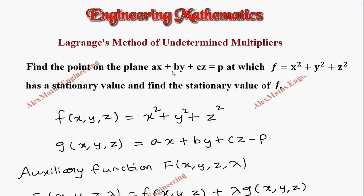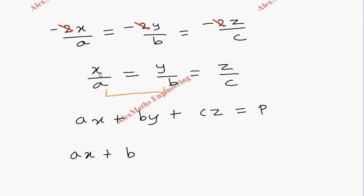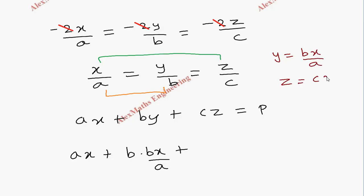Now we use the constraint: the plane equation ax plus by plus cz equals p. We are going to find x by converting everything in terms of x. So ax stays, and substituting y as bx by a and z as cx by a into the constraint equation.